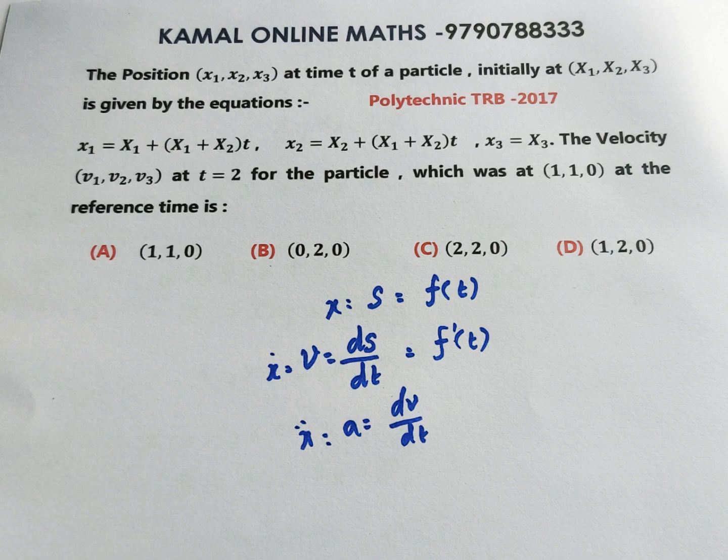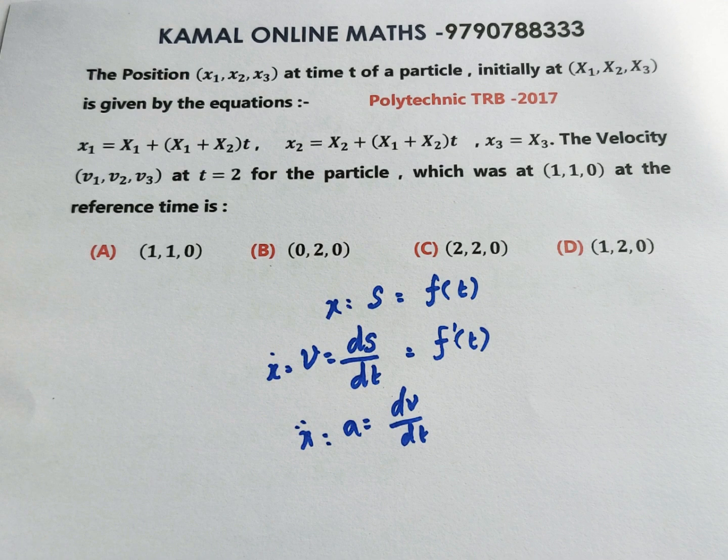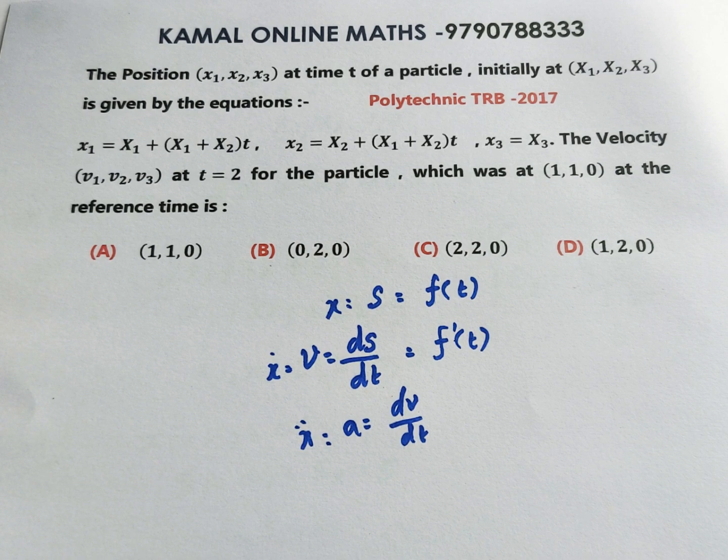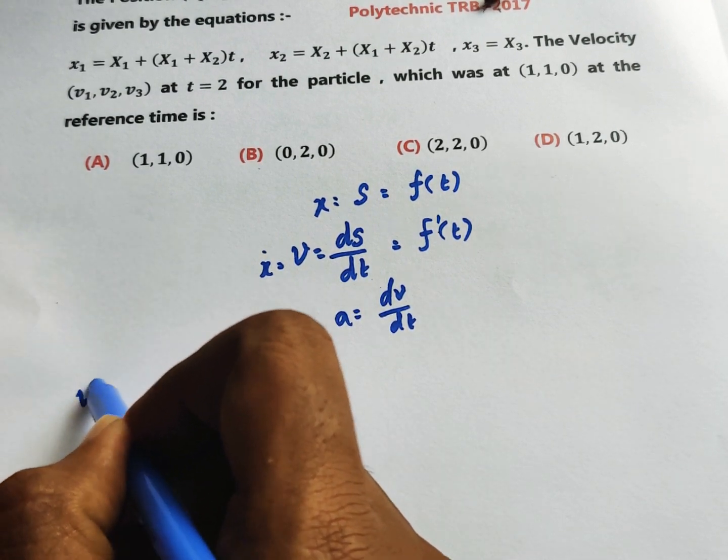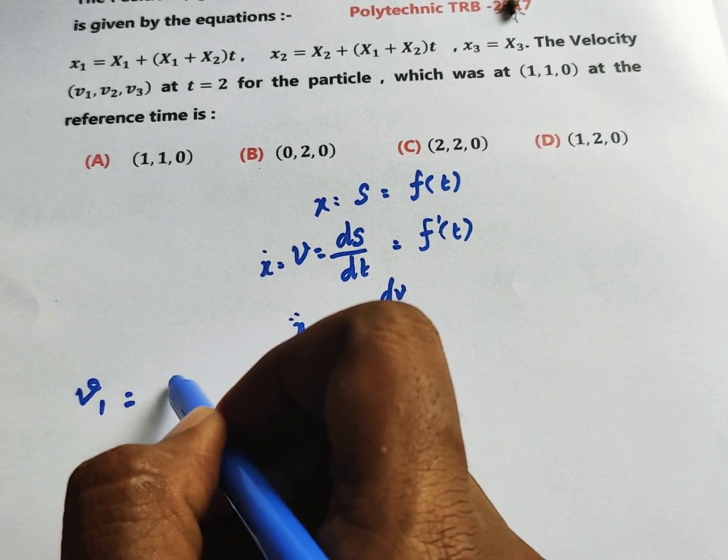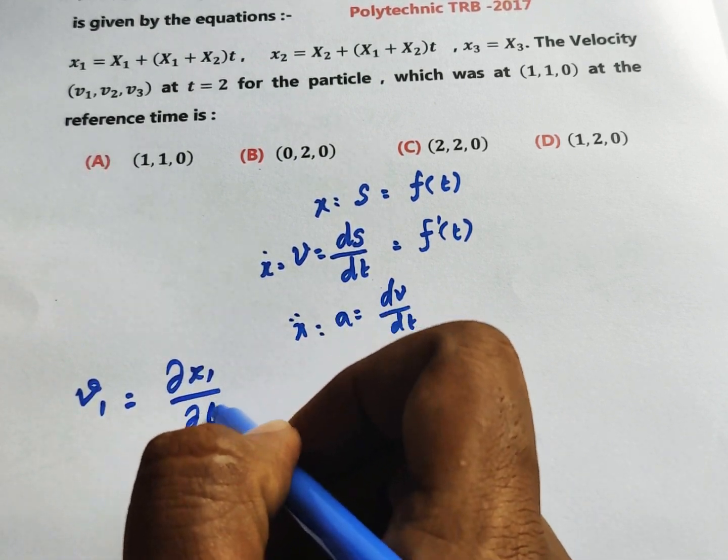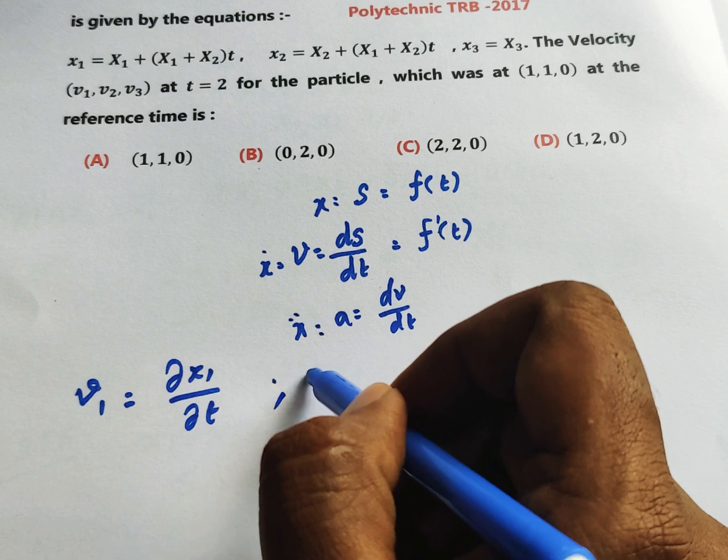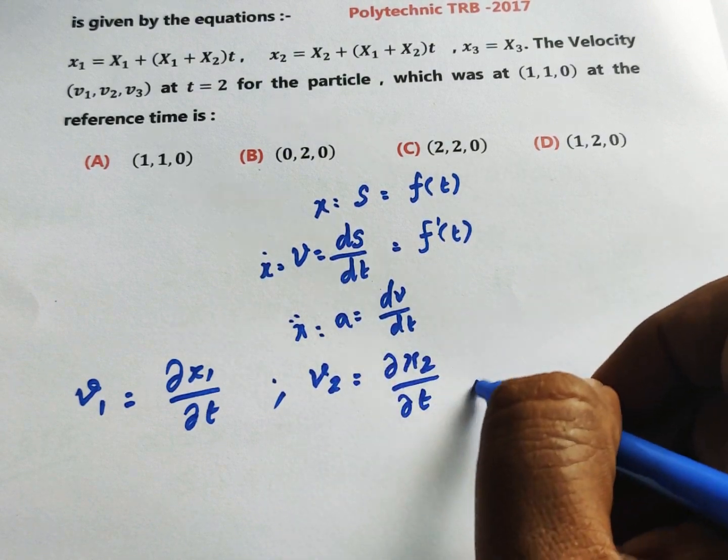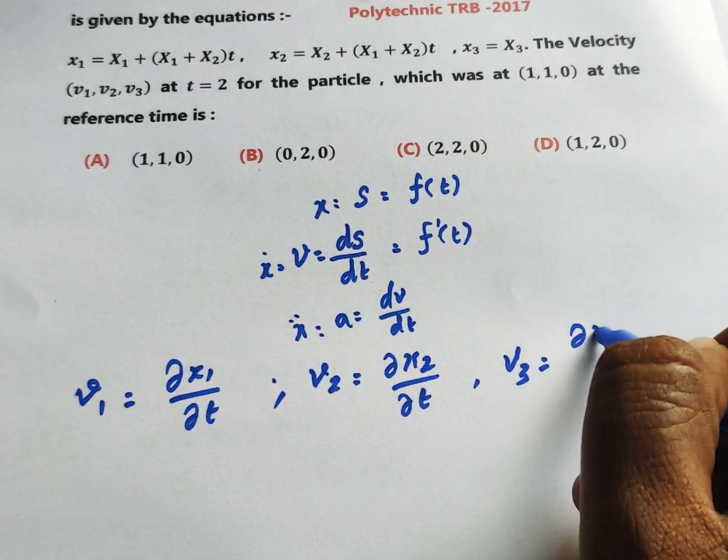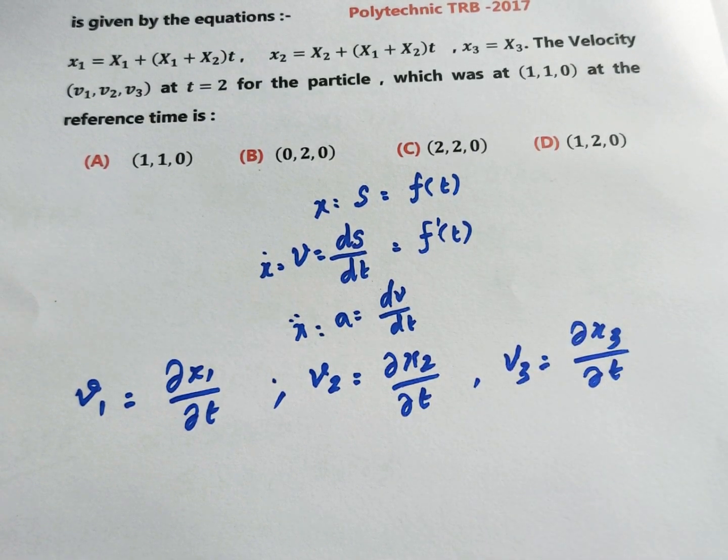For this question with position x1, x2, x3 at time t, we need to find the velocity. The velocity components are: v1 = dx1/dt, v2 = dx2/dt, and v3 = dx3/dt. This is the formula we'll use.